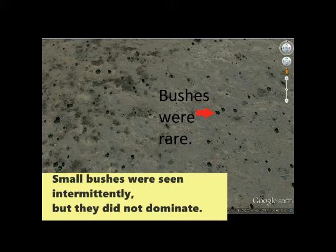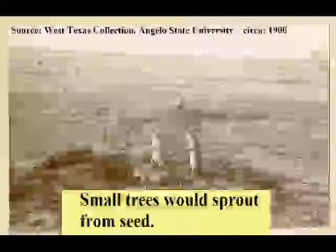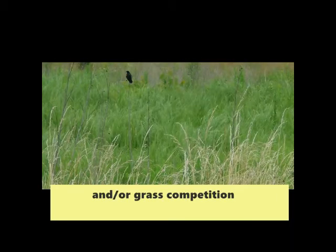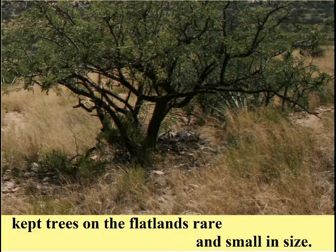Small bushes were seen intermittently, but they did not dominate. Small trees would sprout from seed, but lightning-induced fires and/or grass competition kept trees on the flatlands rare and small in size.